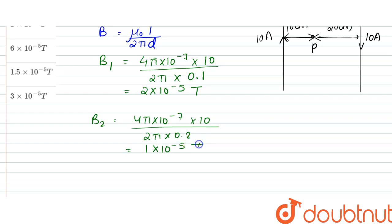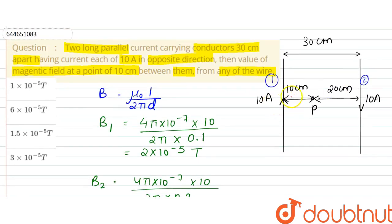So now due to both the currents, according to right hand thumb rule, the magnetic field would go inside the paper due to both the wires. So due to this wire also this would go inside and they would.